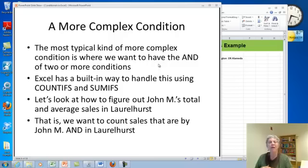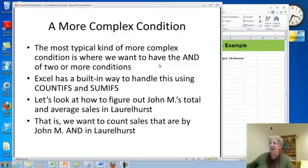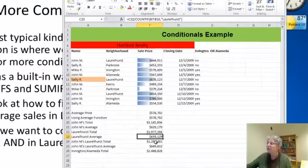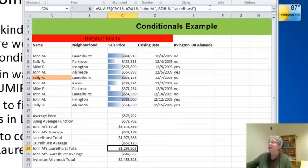Now suppose we want to have more than one condition. For example, suppose we want to know about John M's sales in Laurelhurst. So we have John M and we also have Laurelhurst. There's a way Excel has built in to handle this kind of thing if we want an AND, if we want both conditions to apply, and this is called COUNTIFs and SUMIFs. So let's take a look here. Here's John M's Laurelhurst total.